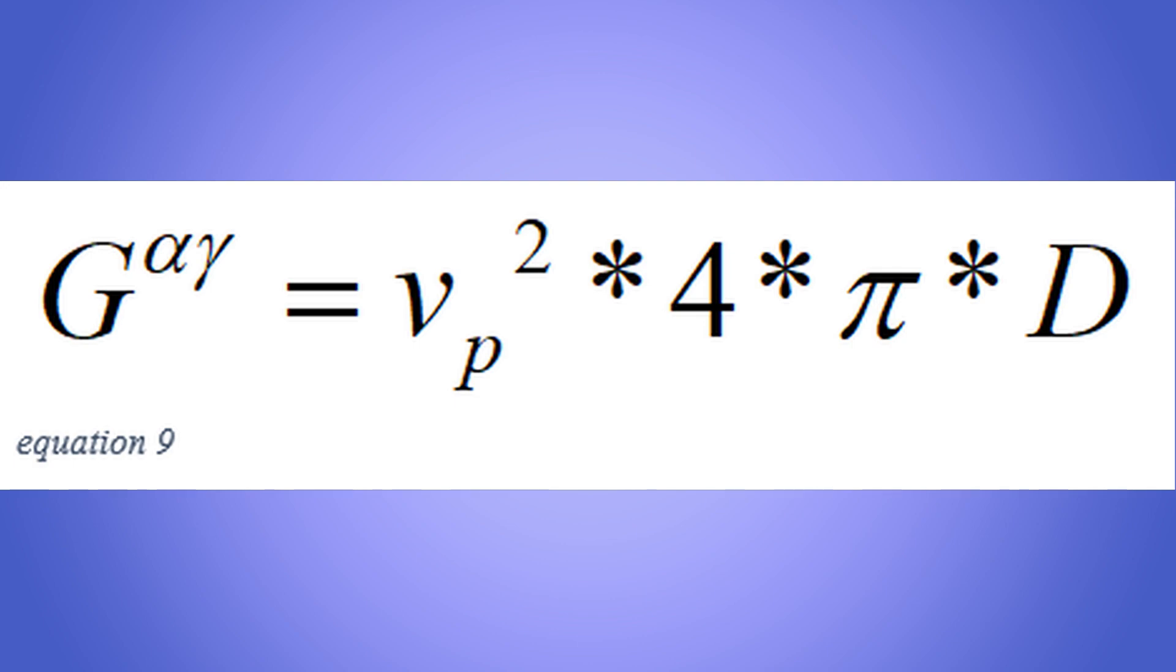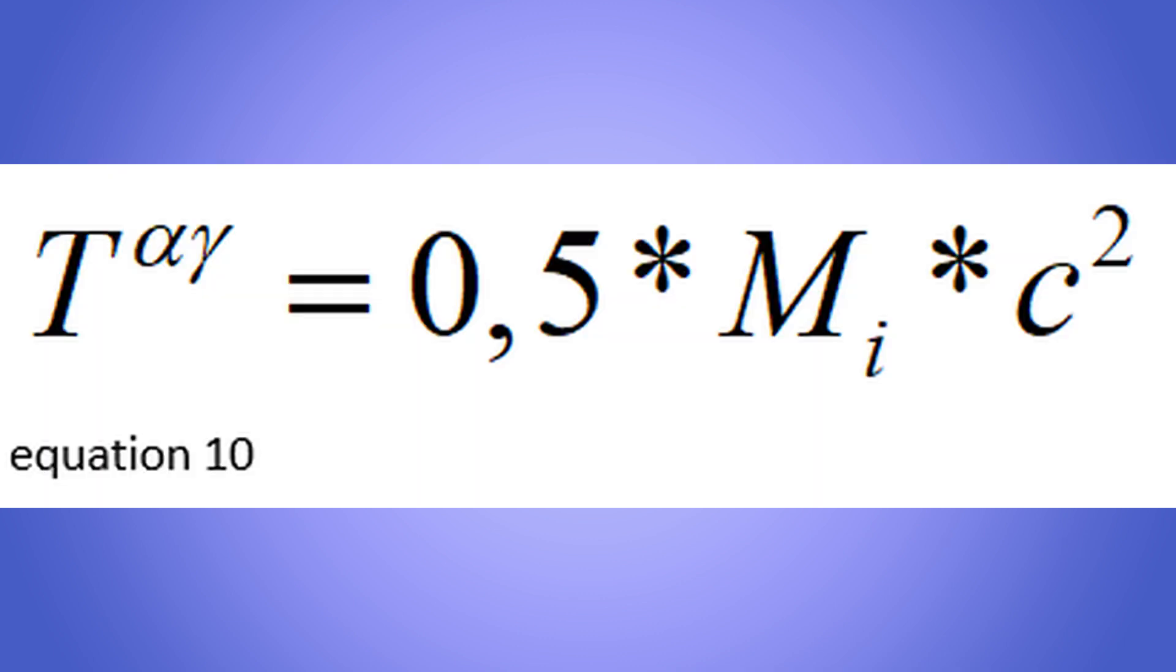And also, G alpha gamma, the Einstein tensor, equals the velocity squared times the radial distance, equation 9. T alpha gamma, the stress energy tensor, equals the kinetic energy of that mass at light speed squared, equation 10.